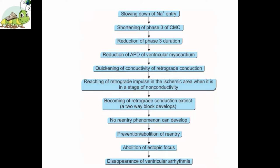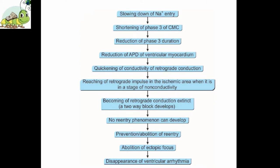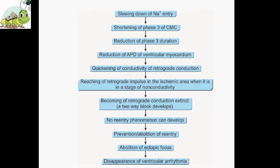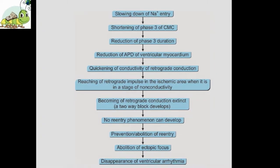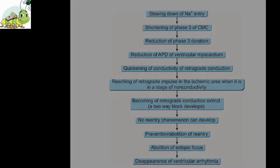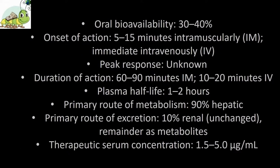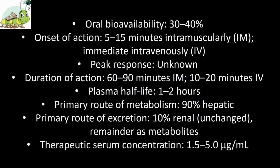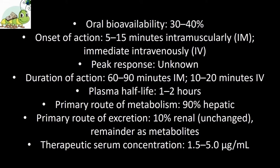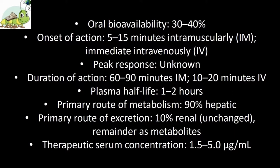Therapeutic uses: Lidocaine is useful in treating ventricular arrhythmias arising during myocardial ischemia, such as that experienced during a myocardial infarction. The drug does not markedly slow conduction and thus has little effect on atrial or AV junctional arrhythmias. Pharmacokinetics: Lidocaine is given intravenously because of extensive first-pass transformation by the liver, which precludes oral administration. The drug is dealkylated and eliminated almost entirely by the liver.